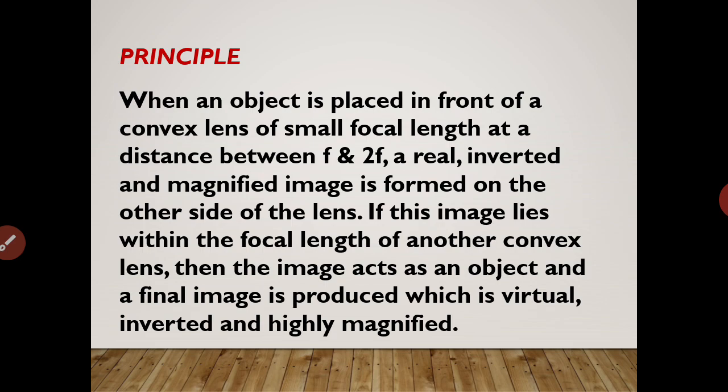The object is placed between f and 2f, that is between the principal focus and the center of curvature. In such a case, a real, inverted and magnified image is formed. Now, if this image lies within the focal length of another convex lens,